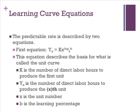k stands for the number of direct labor hours to produce the first unit. Y sub x is the number of direct labor hours to produce the x-th unit. x is the unit number. b is the learning percentage.